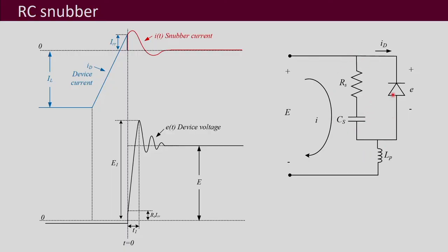Just to recall: this was the circuit we were using for the analysis. Here we have the RC snubber, L_P is the parasitic inductance, and this is the diode. Across it is the voltage E, and this voltage can reach up to a maximum of E1, and this spike is what we want to limit.